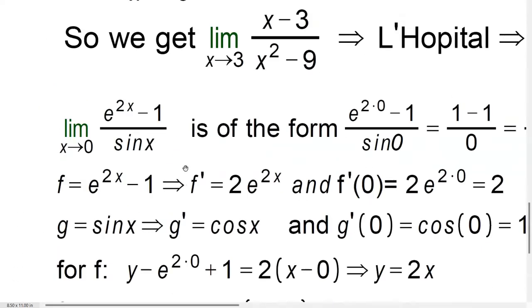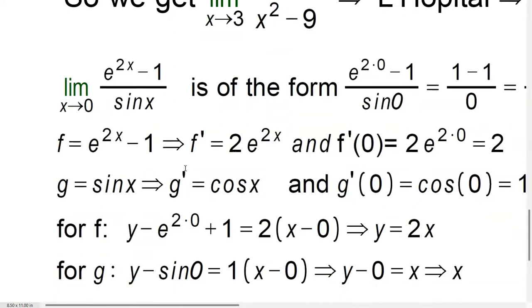So how do we think about this? Let's look at these steps here. Define f to be the top, e to the 2x minus 1. That's just the top of this. It doesn't matter that it's called f. You can call it Bob if you want. Then f prime is 2e to the 2x. And f prime at 0, now why 0? Because the limit is as x is going to 0. f prime at 0 is 2e to the 2 times 0, which is 2. So that's just the slope at 0.